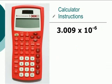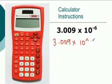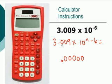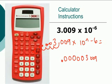You can check scientific notation on your calculator by entering 3.009 times 10 caret negative 6 and pressing equals. You will get 0.000003009 on your calculator to verify your answer.